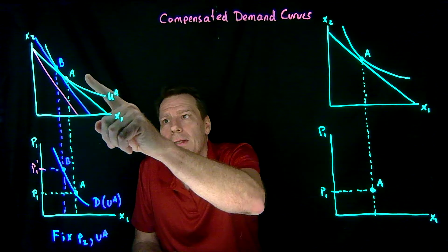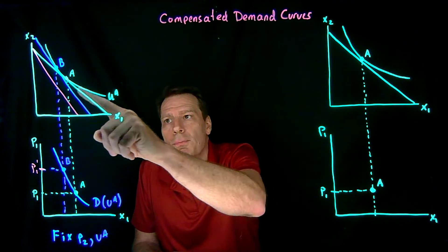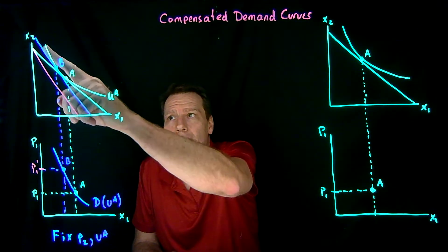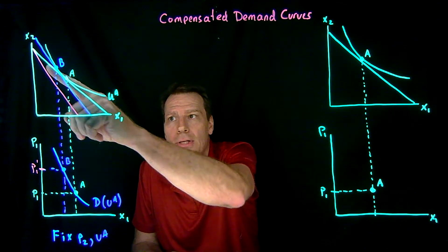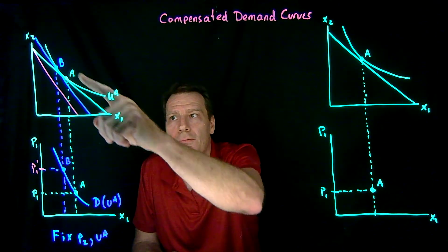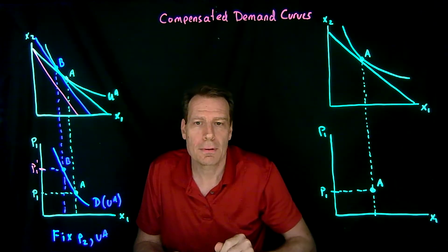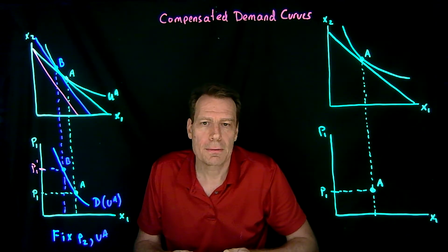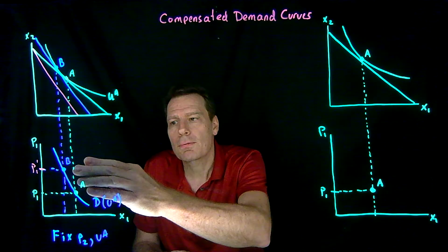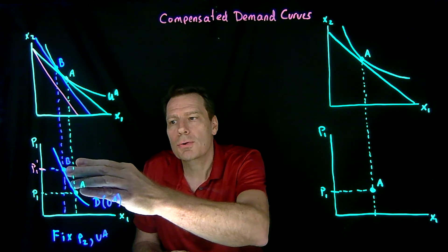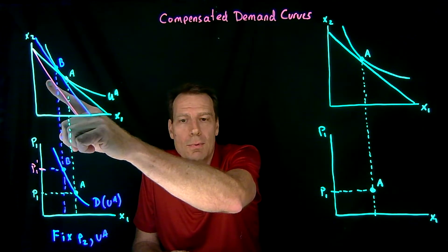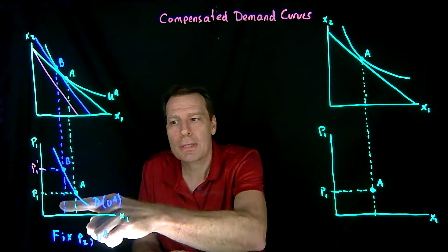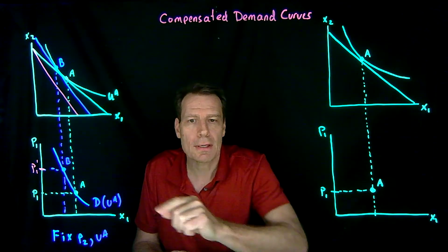This compensated demand curve holds the utility level — and therefore the indifference curve — constant because it includes the compensation. It's derived from two points that arise from a Cayman Island picture: a steep budget and a shallow budget fitted to the same indifference curve. So it arises from a pure substitution effect, whereas the regular demand curve also incorporates the income effect, using point C on the final budget constraint.